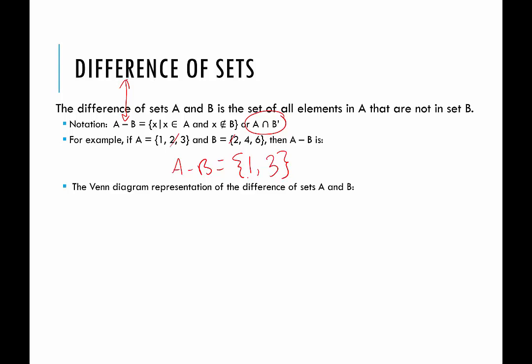Notice this is not the same as the difference of B and A. Order does matter — just like regular subtraction. If we wanted B minus A, this asks for elements in B that are not in A. We know 2 is in both, and that's the only overlap. So the difference of B and A would be 4 and 6.